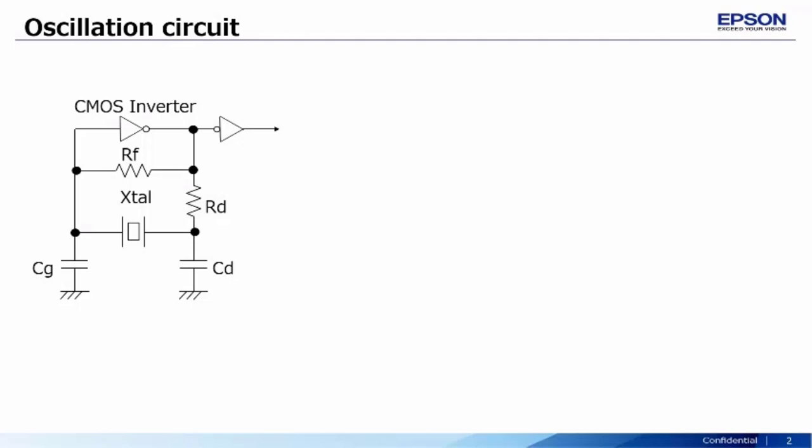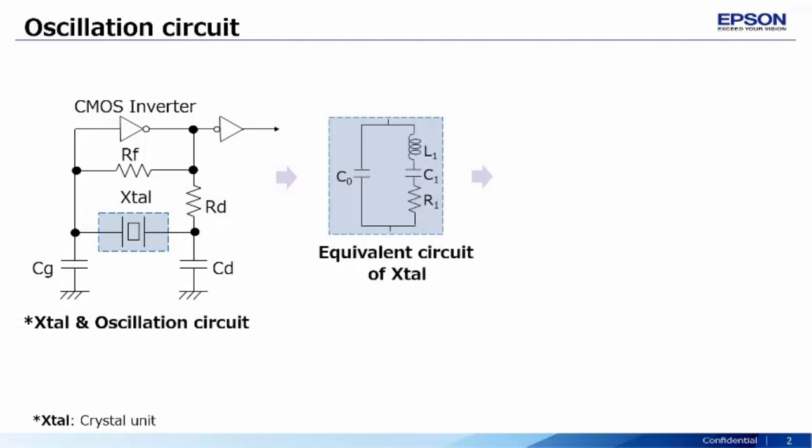Shown here is the crystal oscillation circuit. It is generally comprised of a CMOS inverter, a feedback resistor, both of which are generally included in the microcontroller unit, and the quartz crystal. The quartz crystal can also be expressed by its electrical equivalent as a series RLC circuit in parallel with a shunt capacitance as shown here.